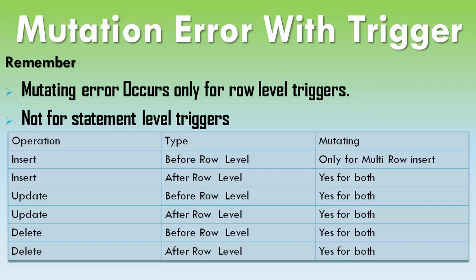For row-level triggers, we have insert, update, and delete operations — and both before row level and after row level triggers. In the first case — insert, before row level trigger — mutation error occurs only on multi-row insertion. For after row level triggers with insertion, both single insertion and multi-insertion can produce a mutation error.